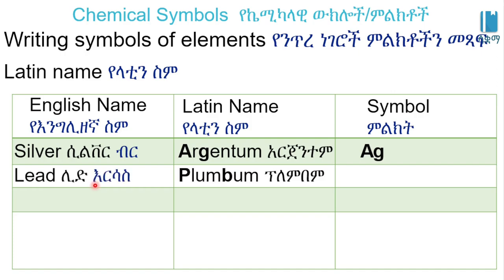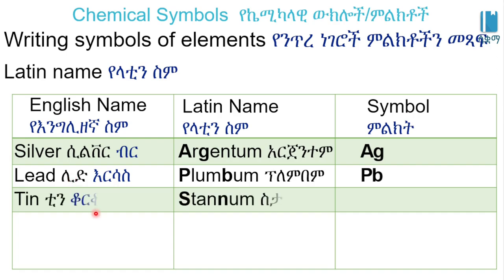Lead — the Latin name is 'plumbum,' so the symbol is Pb. Pb comes from the Latin word plumbum and represents lead. Tin — the Latin name is 'stannum,' so the symbol is Sn. Sn comes from stannum and represents tin.